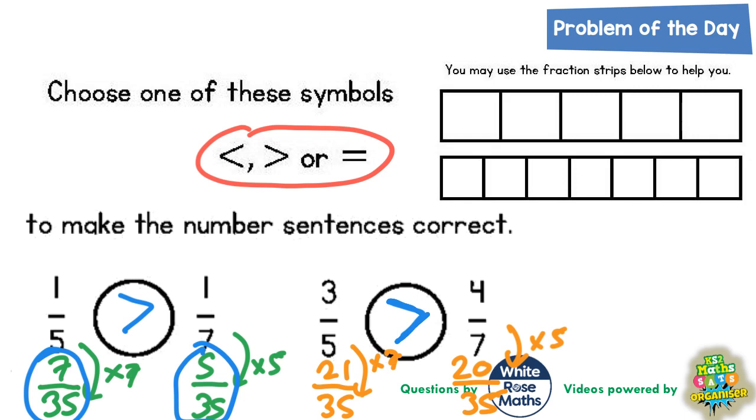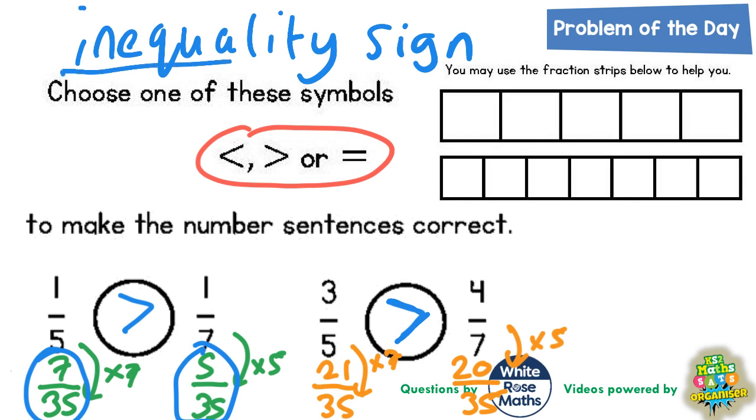The correct name for it is an inequality sign. Inequality sign, it just means the opposite of equals. Well, when two things are equal, they are the same. So if they are unequal, unequal basically means not the same.